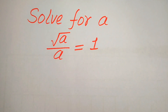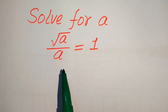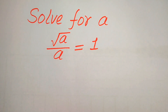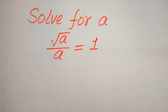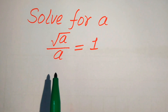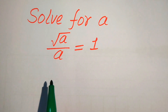Hello everyone. How to solve this problem for the values of a, if we have square root of a divided by a is equal to 1. Here, first we find all the roots of this equation, and at the last we will verify which of these roots are solutions of this equation and which of these roots are extraneous roots.